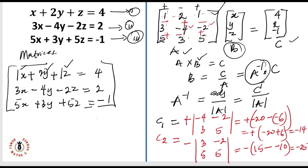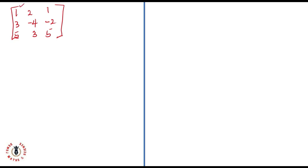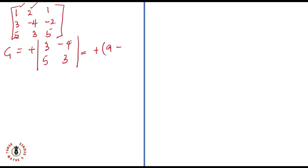Now for C₁₃ — element 1 in the last position of the first row — the sign is positive. We'll be picking 3, minus 4, 5, and 3. So C₁₃ = plus [(3)(3) − (−4)(5)] = plus [9 + 20] = 29.